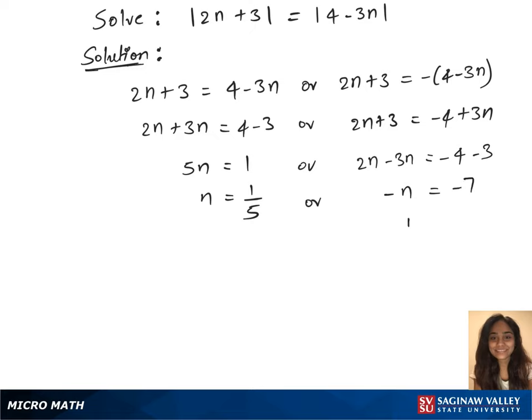Minus n minus gets cancelled and that gives us n equals 7. These are our final solutions: n equals 1 over 5 and n equals 7.